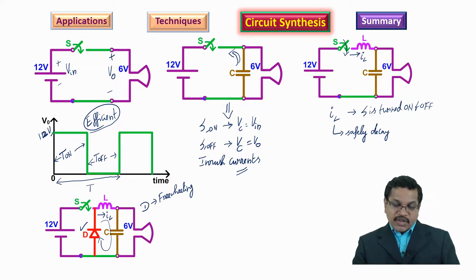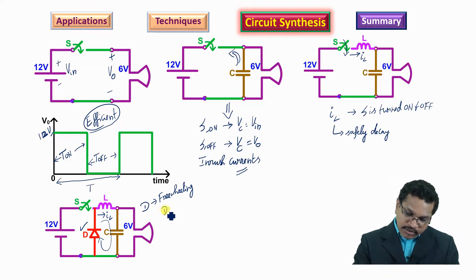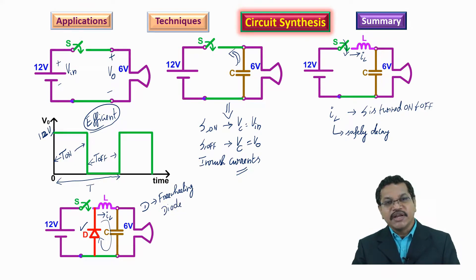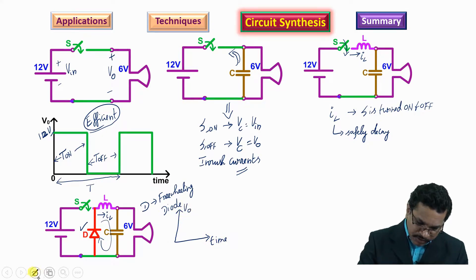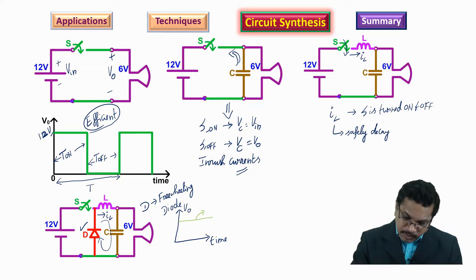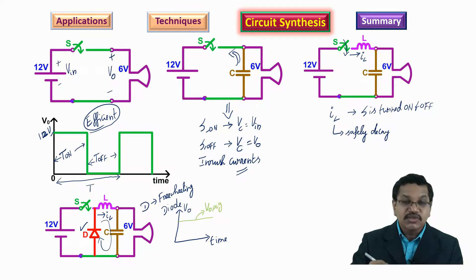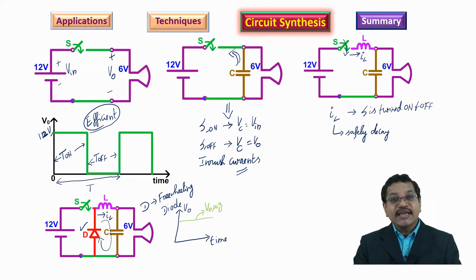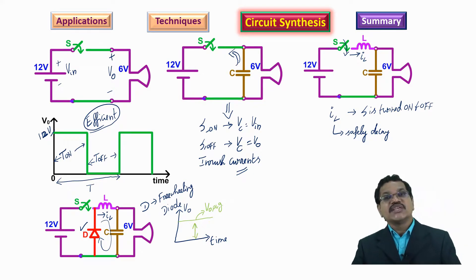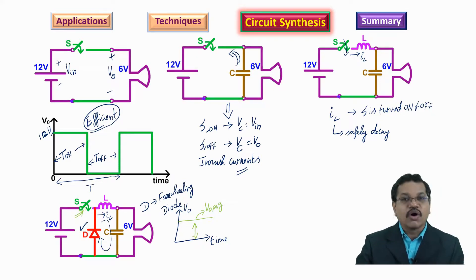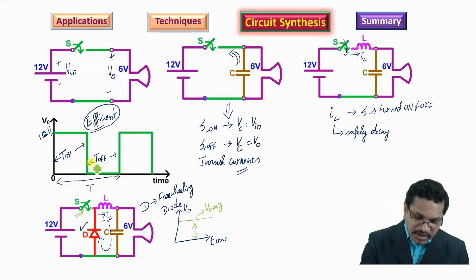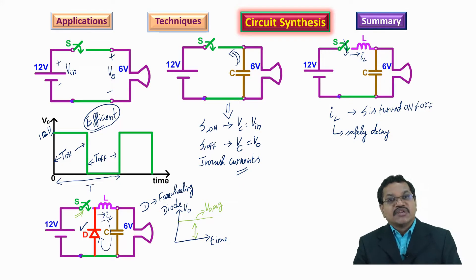This circuit is now complete. The load voltage will be a constant DC voltage, which is the required DC voltage. If we want to change the magnitude of the output voltage — which is what we want, a variable DC voltage — we have to turn on and turn off the switch in a different way, adjusting the on duration and off duration. Those details will be discussed in subsequent videos.